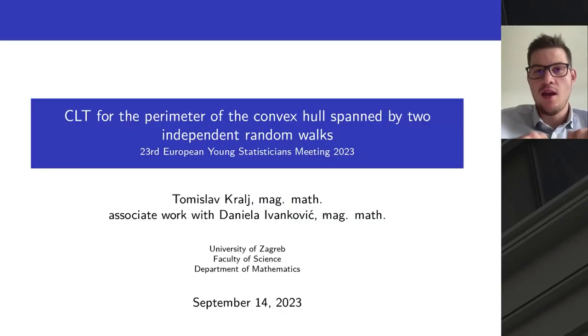Today I'm going to talk about the central limit theorem for the perimeter of the convex hull spanned by two independent random walks in a plane. Consider a captivating real-life problem where you have two beetles on a table positioned in the same point, and they start to move independently in different directions. One can ask what can we say about the area that these two beetles describe up to time n, and one possible consideration might be the convex hull spanned by these two trajectories. This is the main motivation why we study this problem.